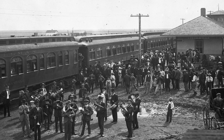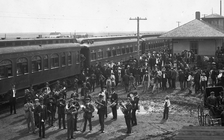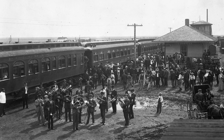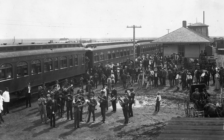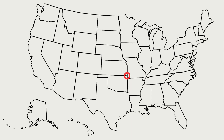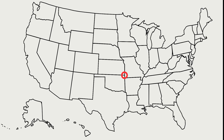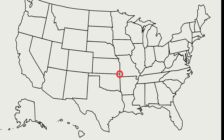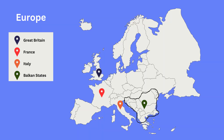Southeast Kansas became the state's socialist center due to its large southern and eastern European immigrant populations and the mining industry. Southeast Kansas was part of the tri-state mining region, which also included southwestern Missouri and northeastern Oklahoma. Mining was not an appealing occupation to many Americans, so the tri-state mining region attracted immigrants from Great Britain, France, Italy, and the Balkan states.